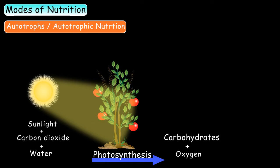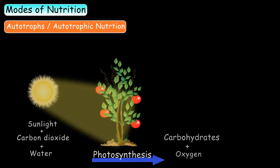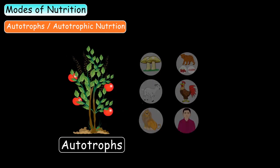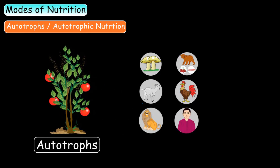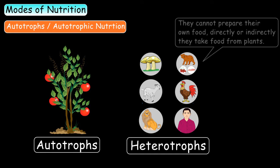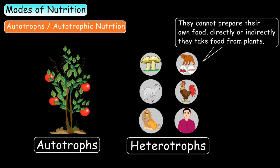Oxygen is released as a byproduct in this process. So green plants prepare their own food, which is why they are called autotrophs. The rest of all life forms except for these green plants are called heterotrophs or consumers, as they cannot prepare their own food. Directly or indirectly, they take food from plants.